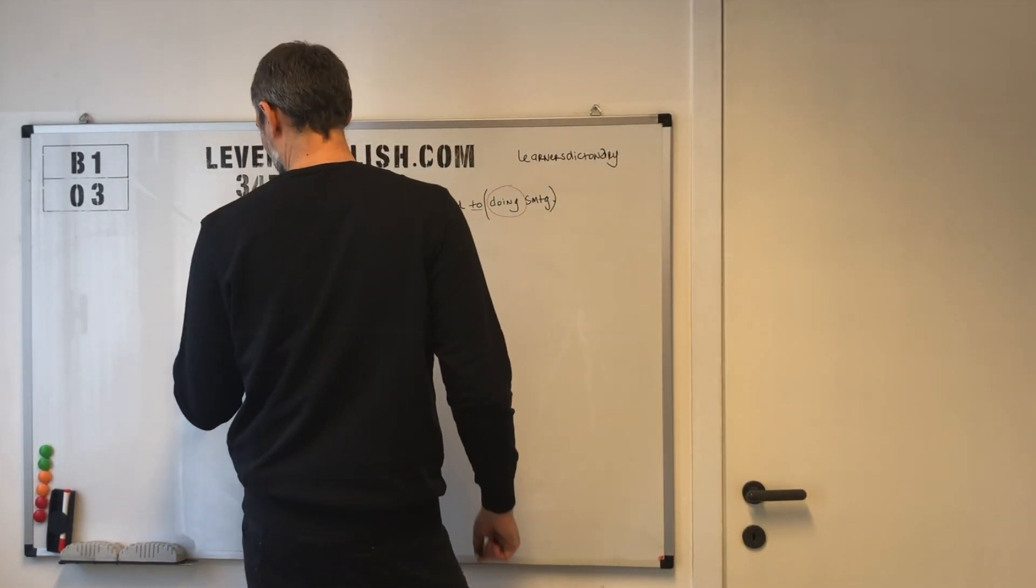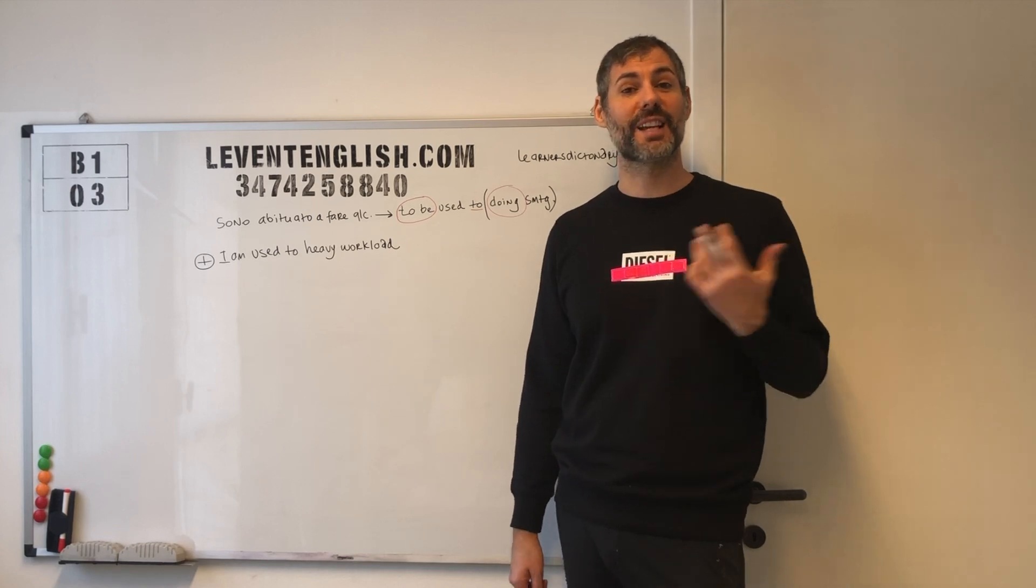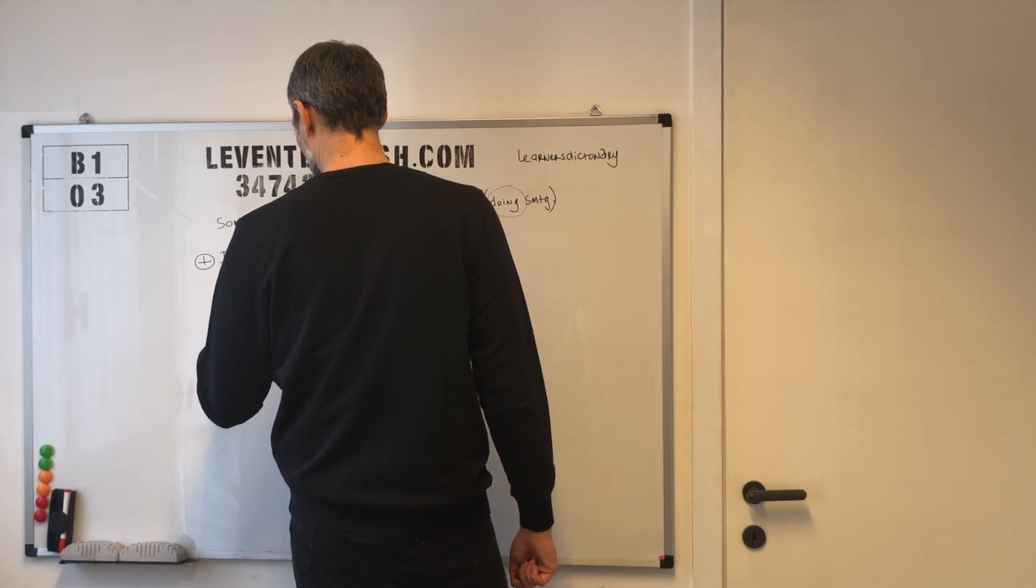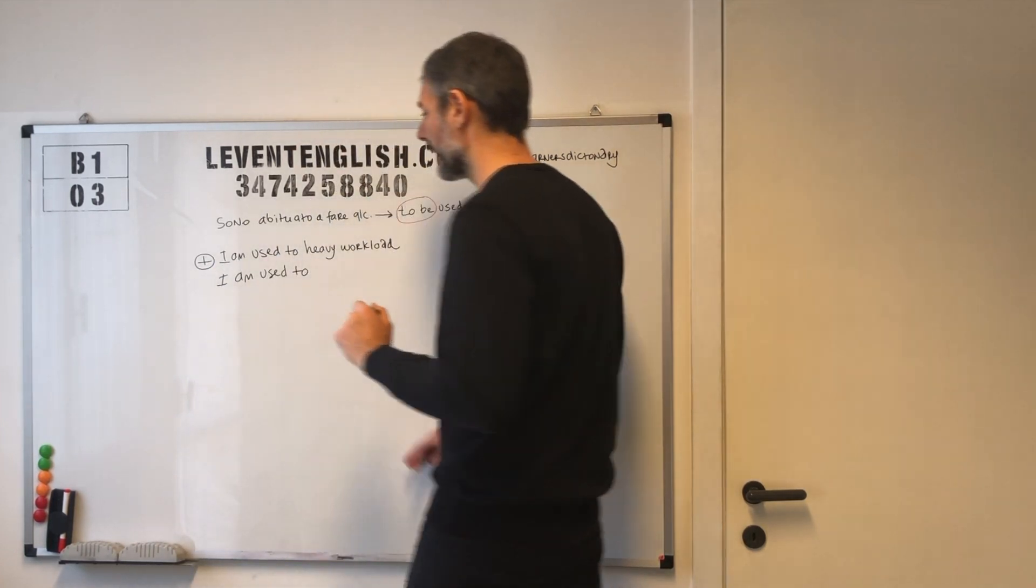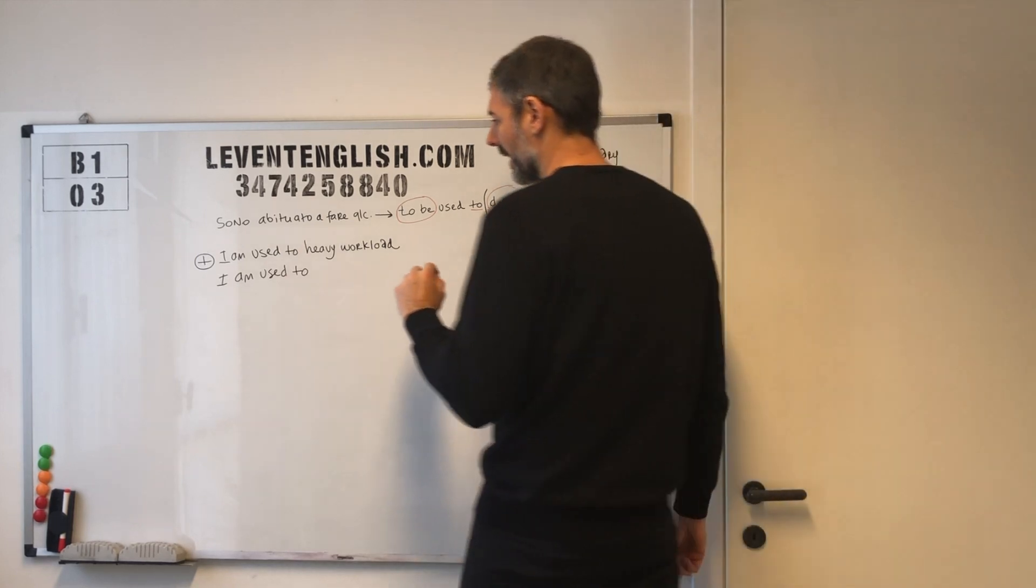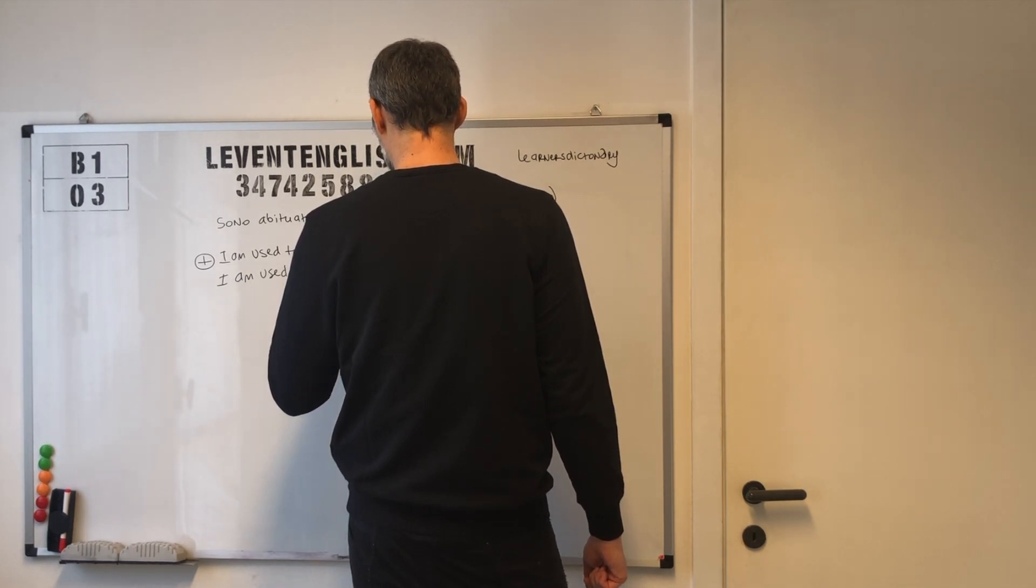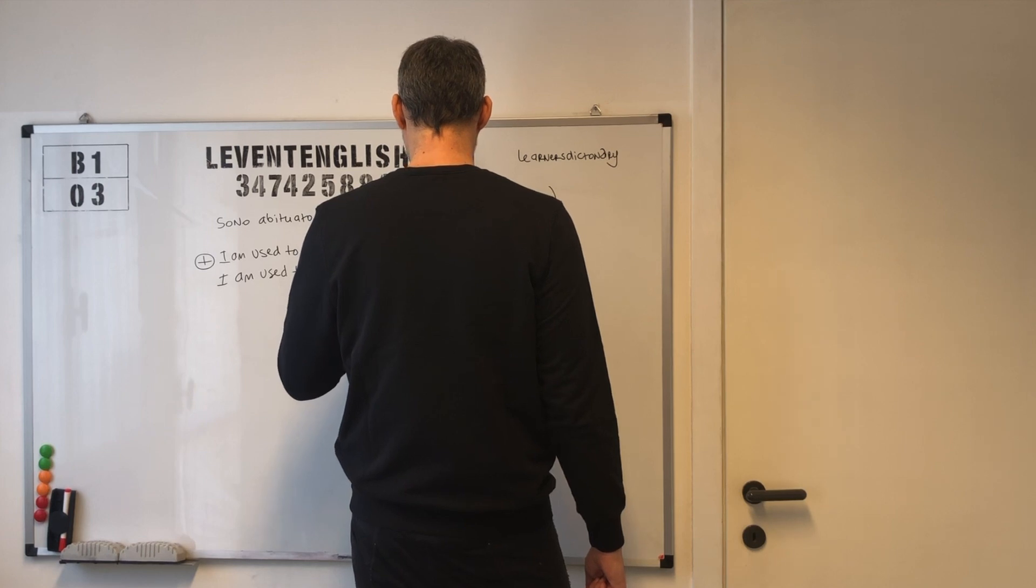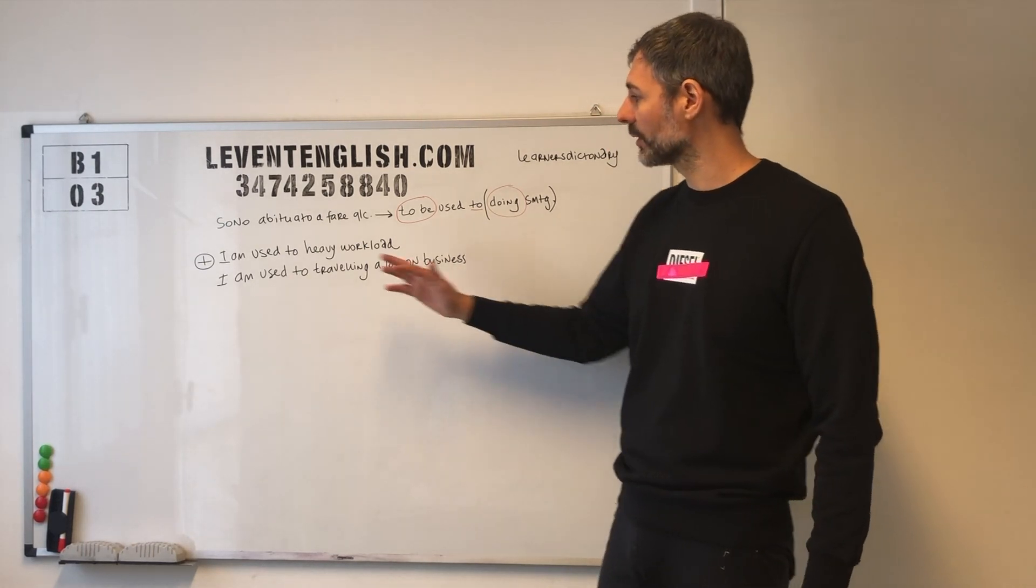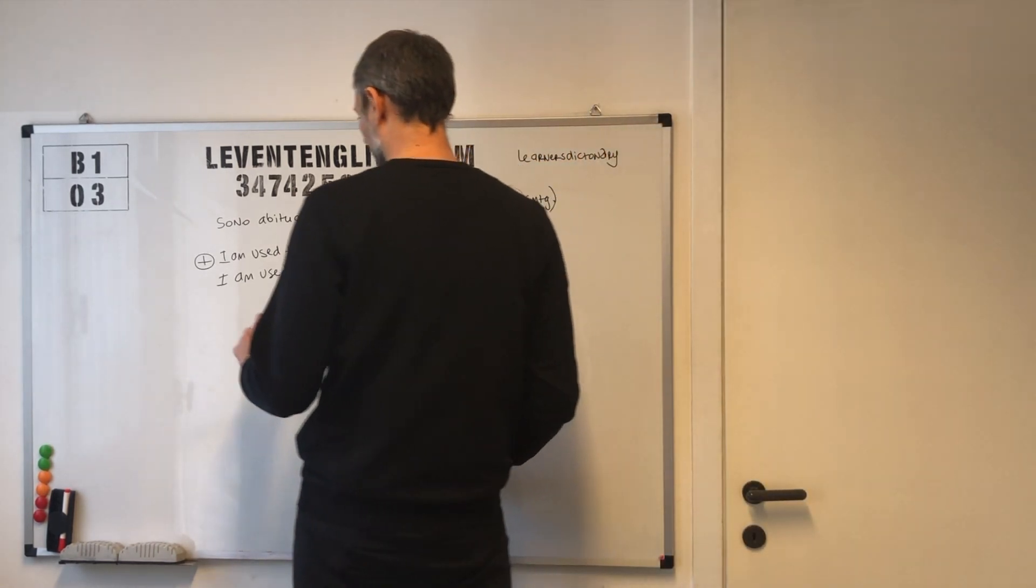Facciamo un altro esempio sempre affermativo questa volta con un verbo. Vogliamo magari raccontare che noi siamo abituati a viaggiare spesso per lavoro. Dovremo metterci il verbo con la forma ing. I'm used to traveling a lot on business.